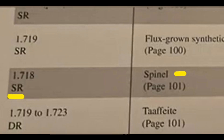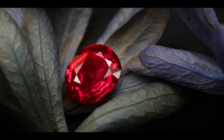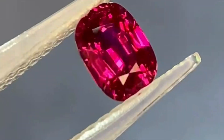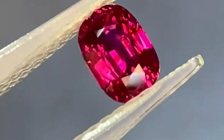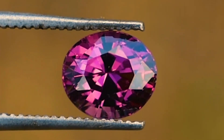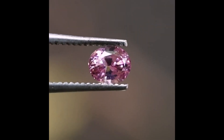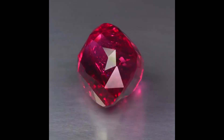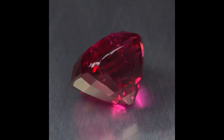When we compare that to spinel, which is 1.718 with no range, they don't overlap at all — you could actually stop there. You can also look at birefringence. In this case, spinel doesn't have any, meaning no matter what angle you test it at, you're going to get 1.718 every single time, versus ruby, which will have a 0.008 to 0.01 range of birefringence.